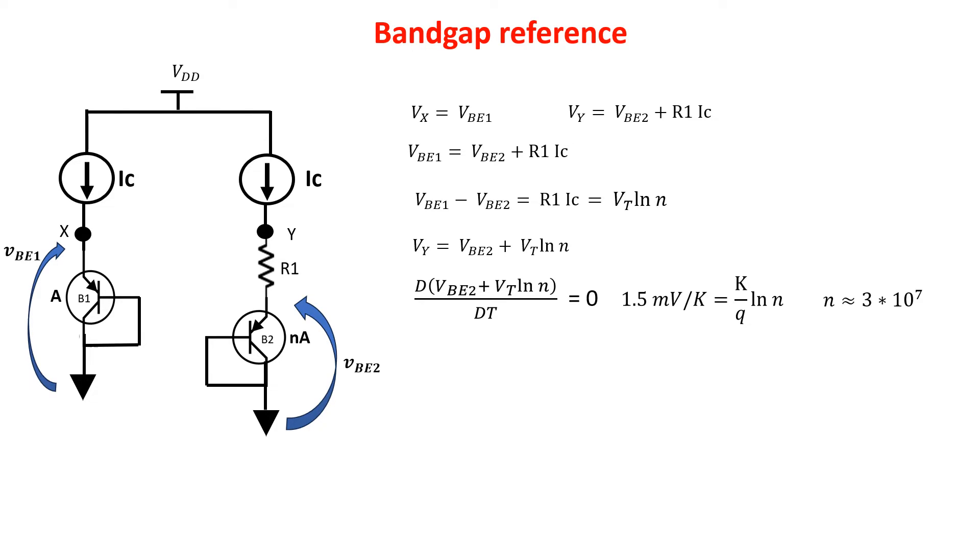So in order to make the voltage temperature independent, we add a coefficient alpha to have margins, so that now we can act on two parameters, alpha and N, to make the two thermal coefficients equal. Since K over Q equals 0.087 millivolts per Kelvin, we have that alpha log N has to be equal to 17.2, so we can take for example alpha equals 6 and N equals 18.